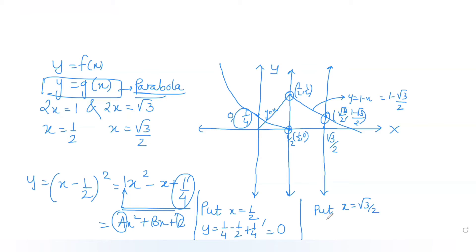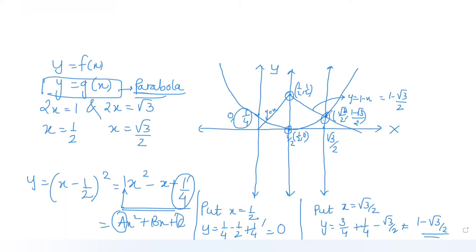Now putting x = √3/2: y = 3/4 + 1/4 - √3/2 = 1 - √3/2. This is the same y-coordinate we found on the line 1 - x. So the parabola, and both straight lines, all intersect at the point (√3/2, 1 - √3/2).